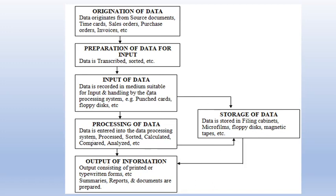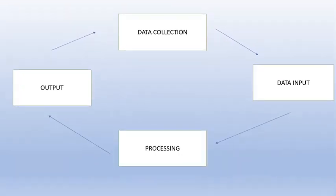Input, processing, and output can all engage storage. Storage of data: data is stored in filing cabinets if it is hard copy — printed or typewritten data. It can also be stored in microfilms, floppy diskettes, magnetic tapes, etc. Some people simplify the diagram to show: data collection → data input → data processing → output. That is a simplified version of the full diagram, but the detailed version is more comprehensive.